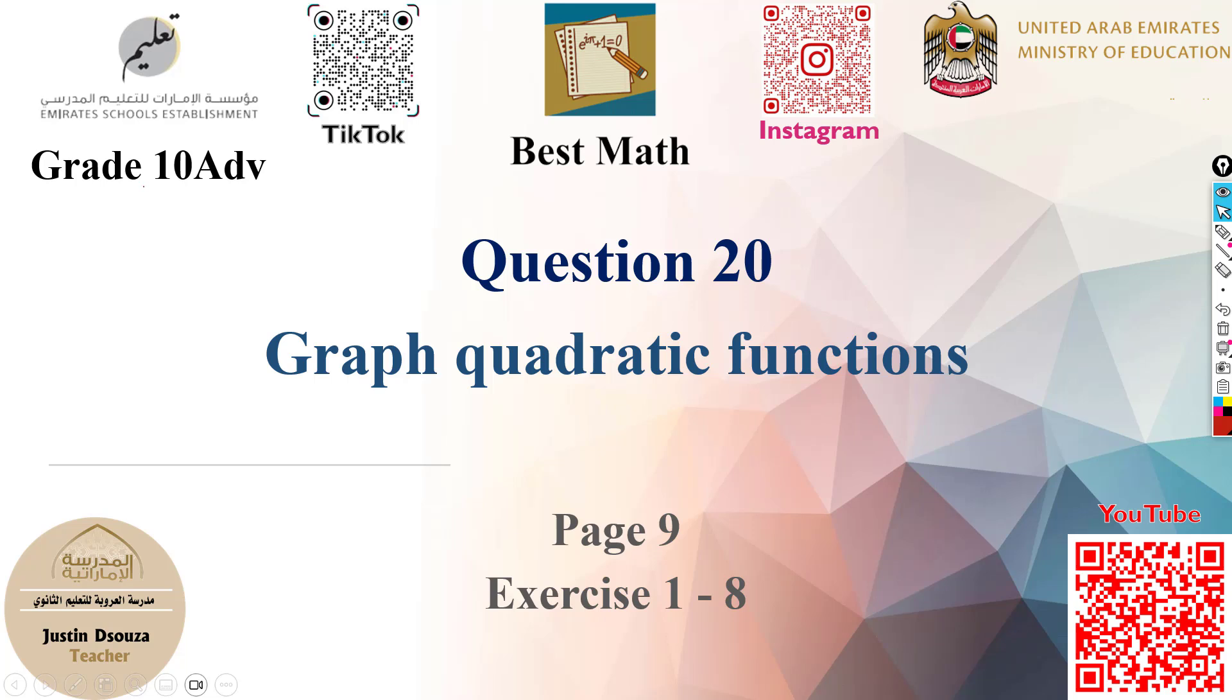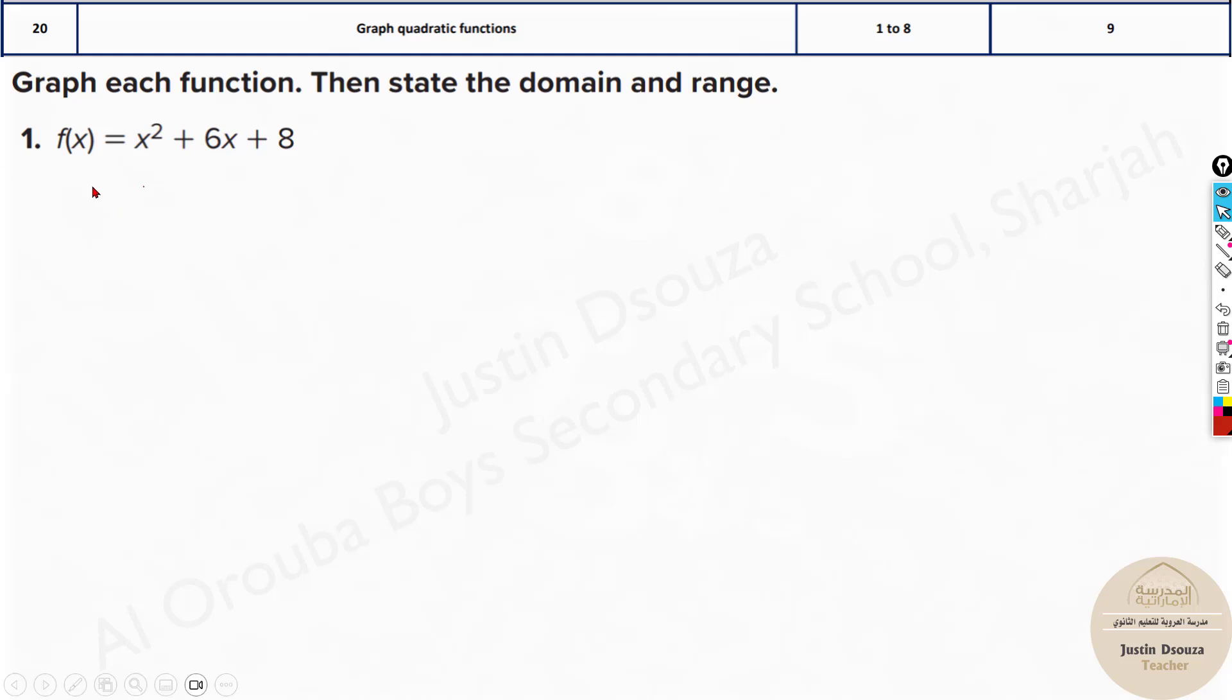Moving on to question 20, it is to graph quadratic functions. This is a quadratic function here, x² + 6x + 8. Now we have to write each step and graph it.